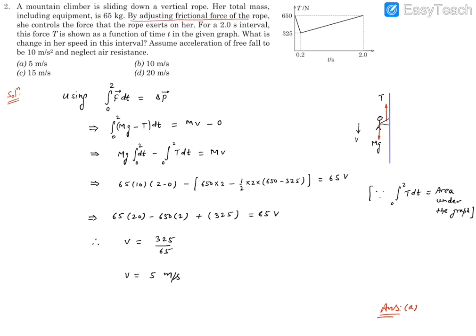By adjusting frictional force of the rope, she controls the force that the rope exerts on her. For 2 seconds of time interval, this force T is shown in the figure as a function of time. What is the change in her speed in this time interval? Assume gravity g as 10 m/s² and neglect air resistance.